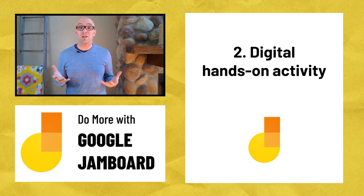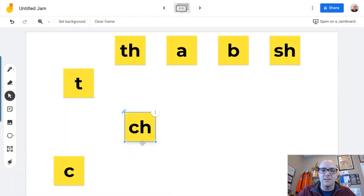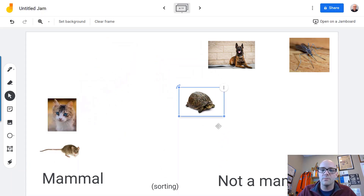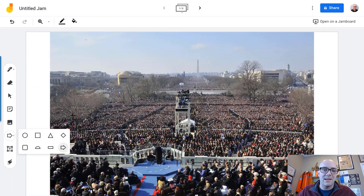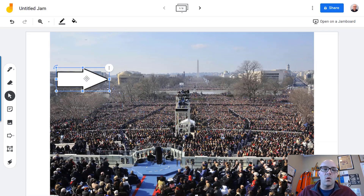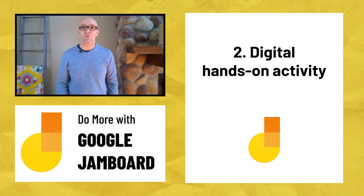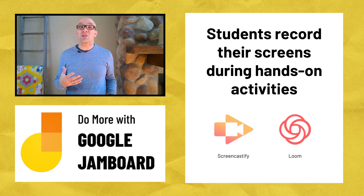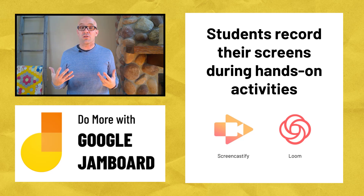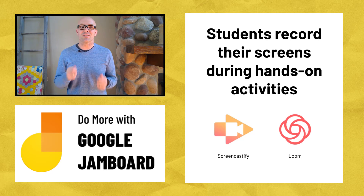Set up some digital manipulatives on a Jamboard frame. They might be sticky notes that you want students to drag into place, or images — even moving animated GIF images — that students can drag into place. Students can even pull circles and arrow shapes on top of photos, artwork, or diagrams to show what they're learning. Want to take it to the next level? Have students use a screen recording tool like Screencastify or Loom to record their screen as they move those manipulatives around. Students can talk through what they're doing and record their thinking in audio and video — a big upgrade from a couple of sticky notes on their desk.